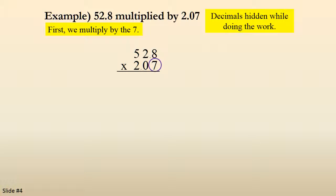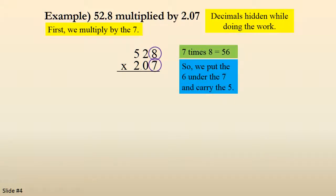We're going to pretend that the decimal points are not there. First, we're going to multiply by the 7. 7 times 8 gives us 56. So we put the 6 underneath the 7 and carry the 5.